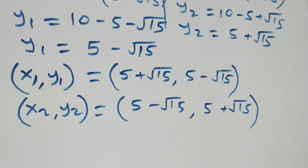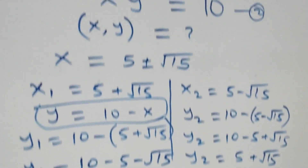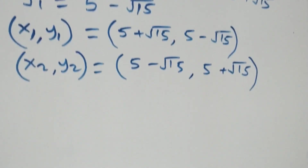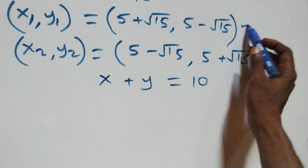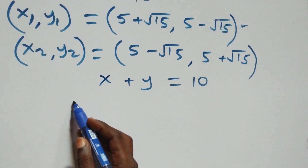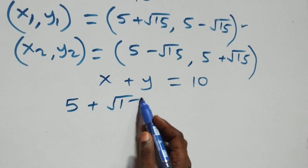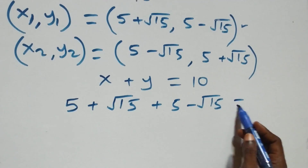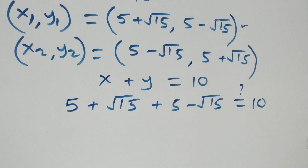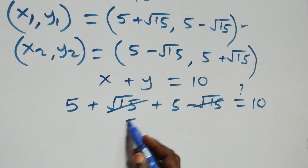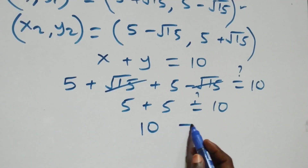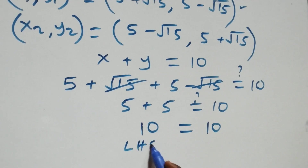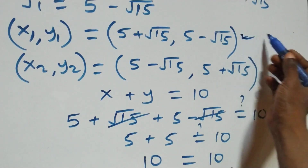We can check if these solutions satisfy the two given equations. Substituting into equation one, x plus y equals to ten, using the first solution: x is five plus root fifteen, plus y which is five minus root fifteen. Root fifteen minus root fifteen cancels out, and we are left with five plus five, which equals ten. So the left-hand side equals the right-hand side, and therefore these solutions satisfy the first equation.